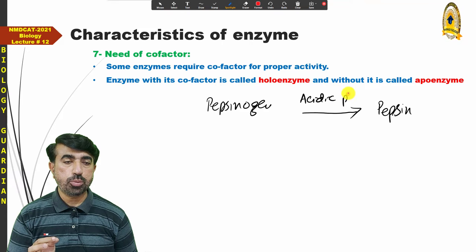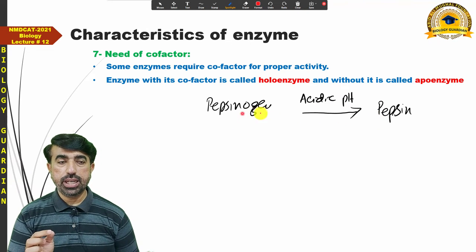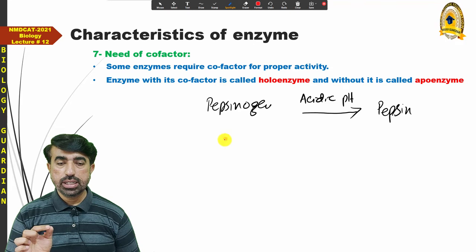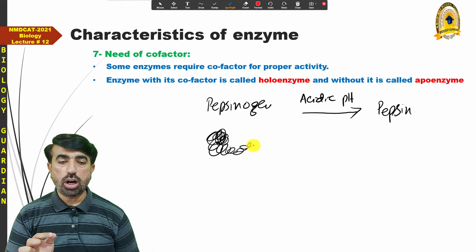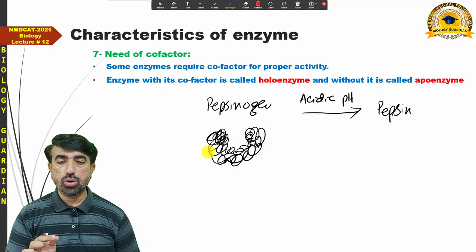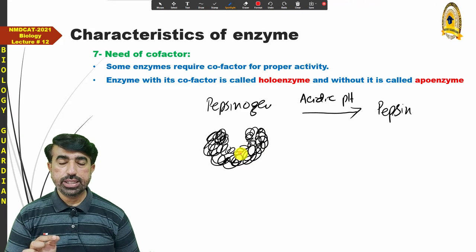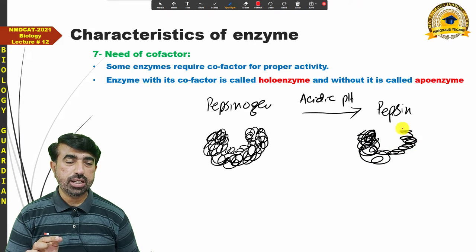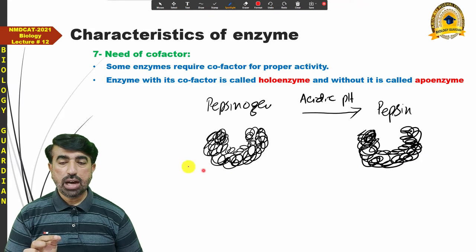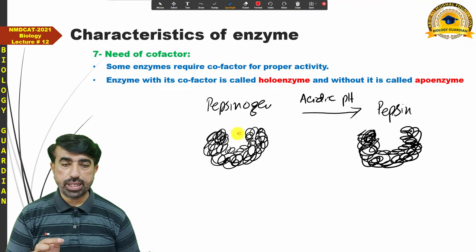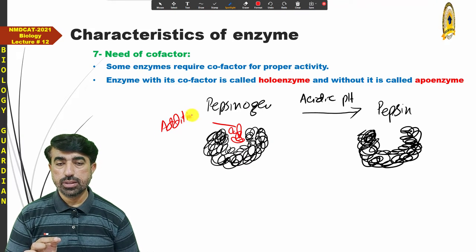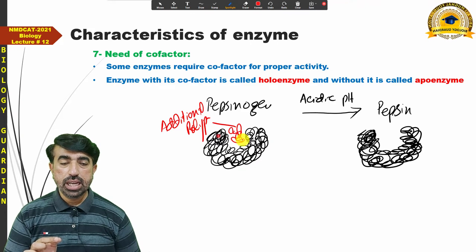Consider that pepsin is found in our stomach. Pepsinogen is secreted, and in the structure of pepsinogen, the active site has an additional polypeptide occupying it. This additional polypeptide blocks the active site. For example, this enzyme is pepsinogen, and in its active site there is an additional polypeptide. The substrate cannot bind for digestion as long as this additional polypeptide occupies the active site.